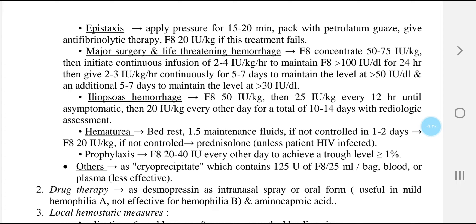For major surgery and life-threatening hemorrhages, give factor 8 concentrate 50 to 75 international units per kg, then initiate continuous infusion of 2 to 4 international units per kg per hour to maintain factor 8 at more than 100% for 24 hours. Then give 2 to 3 international units per kg per hour continuously for 5 to 7 days to maintain the level at more than 50%, and an additional 5 to 7 days to maintain the level at more than 30%.